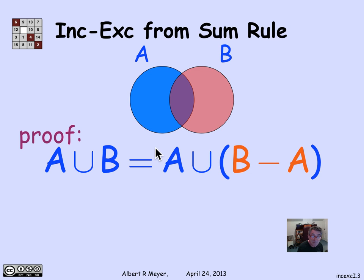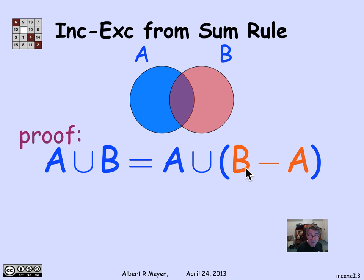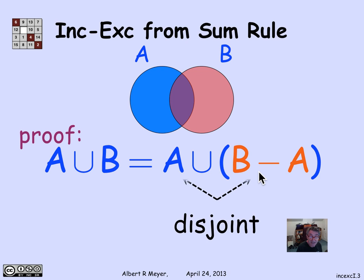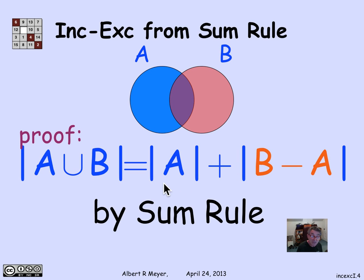A union B can be expressed as the union of two disjoint sets: only A — the round blue circle — and what's left, the points in B that are not in A, shown as the lighter orange-colored region. So A union B equals A union (B minus A). These are two disjoint sets whose union is A union B, so the size is just the size of A plus the size of B minus A.